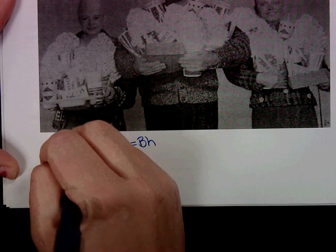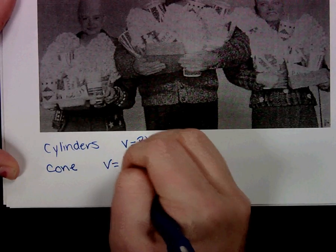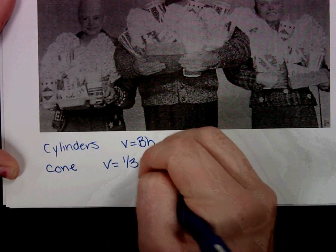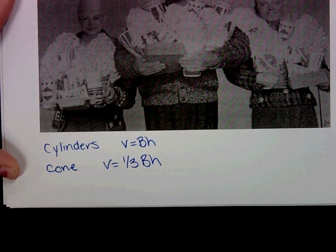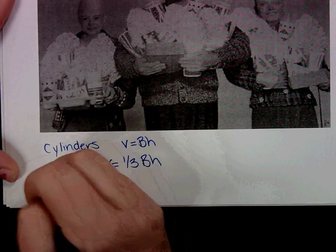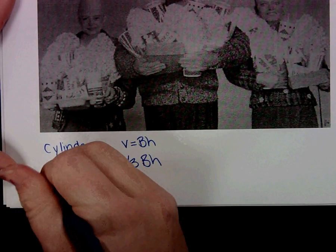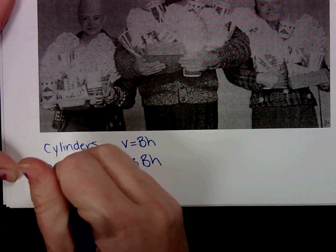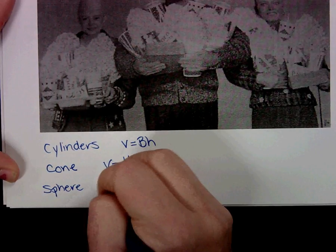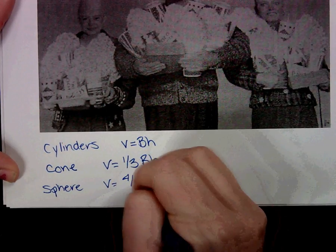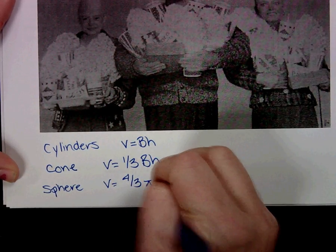For our cone, our volume equals one-third the area of the base times the height. And for our sphere, our volume equals four-thirds pi times our radius cubed.